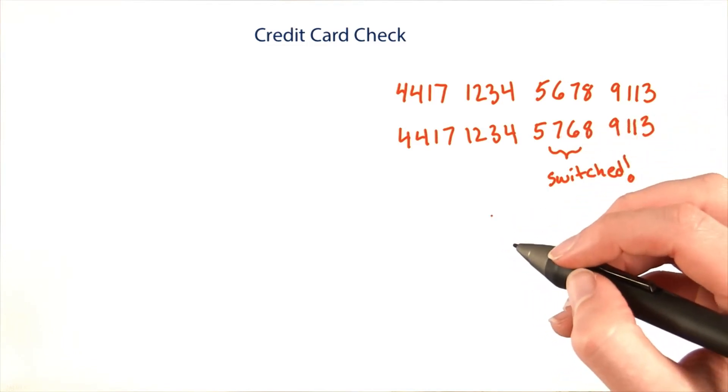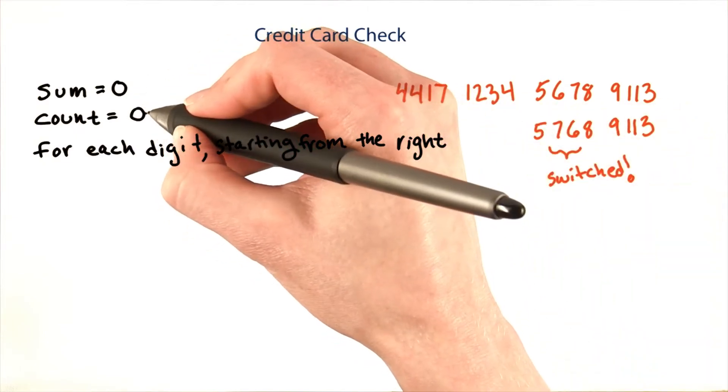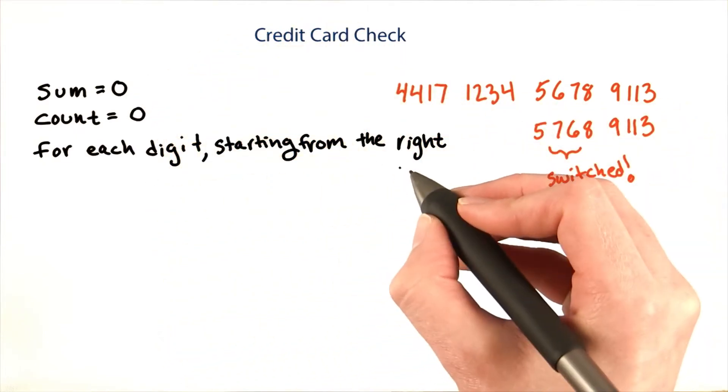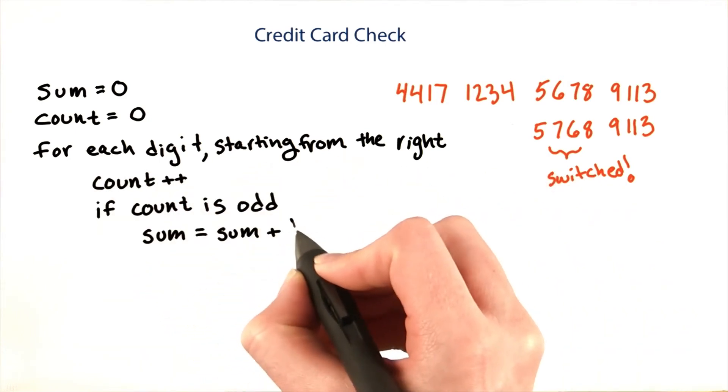The algorithm has a similar structure to the code for calculating the sum of digits. It starts with a sum of 0 and a count of 0. And then for each digit, starting from the right, we increment the count. And if the count is odd, we add the digit to the sum.